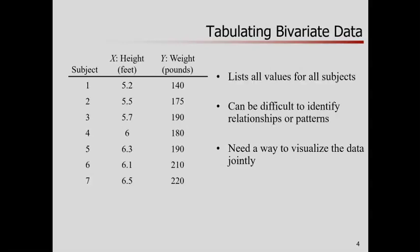Here's a tiny data set — seven subjects with their height and weight listed in a table. This is a nice representation for recording values, but it's not very useful for understanding relationships. It's hard to say what's going on in the relationship between height and weight just by looking at a table.